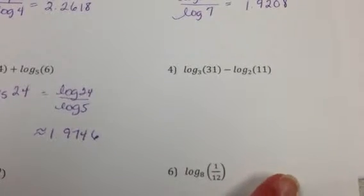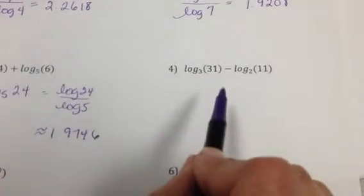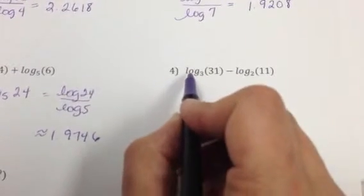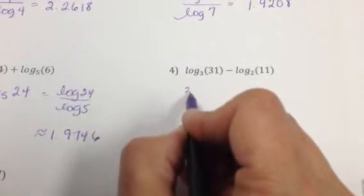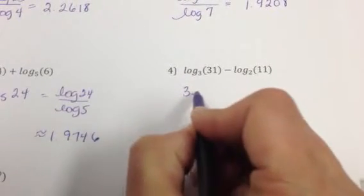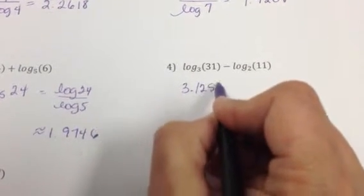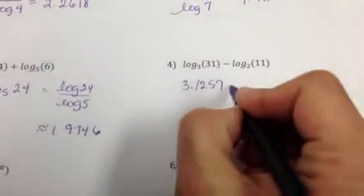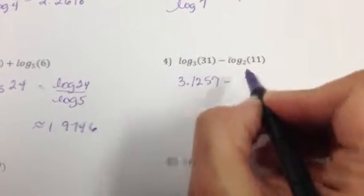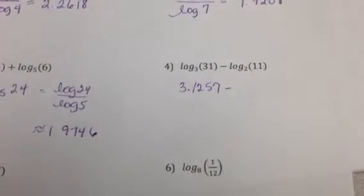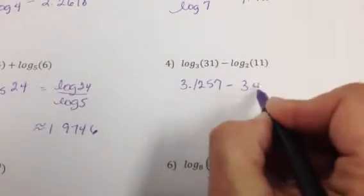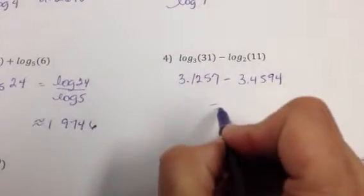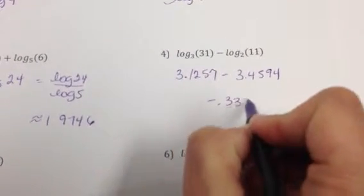All right. For number 4, again, we want to see if we can rewrite that as a single logarithm. However, I don't have a common base here, so I cannot do that. I'll take the log of 31 divided by the log of 3, approximately 3.1257. And then we'll take the log of 11 divided by the log of 2. And that gives us 3.4594. And when we subtract that, we get negative 0.3337.